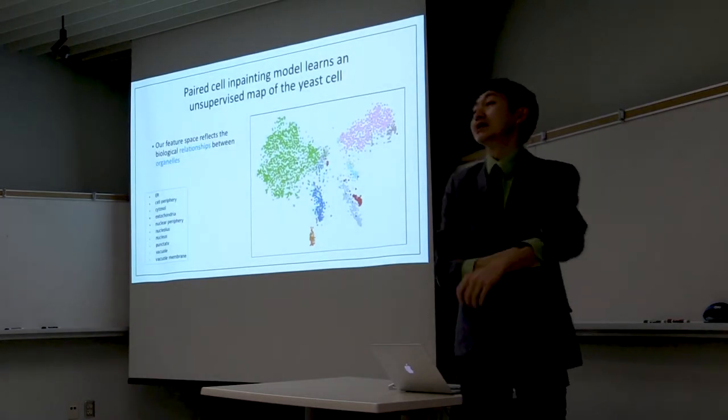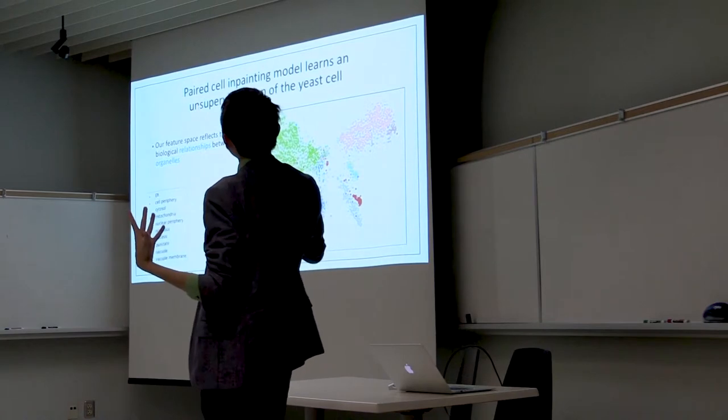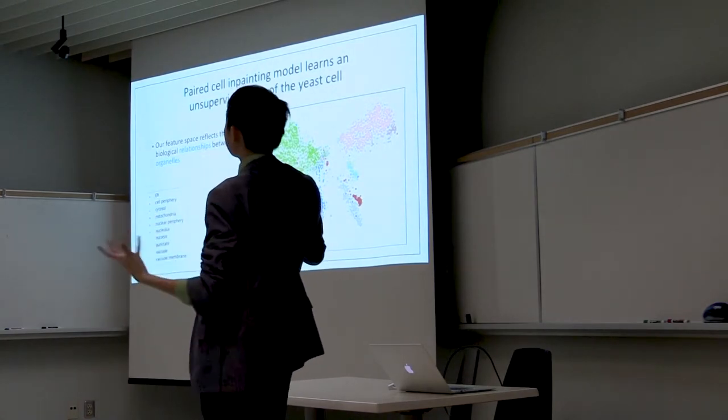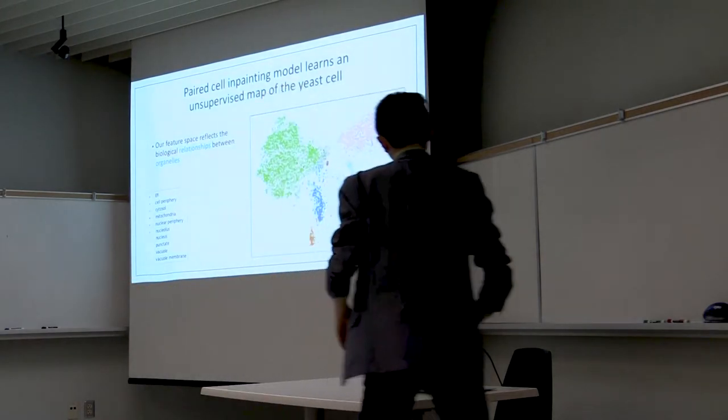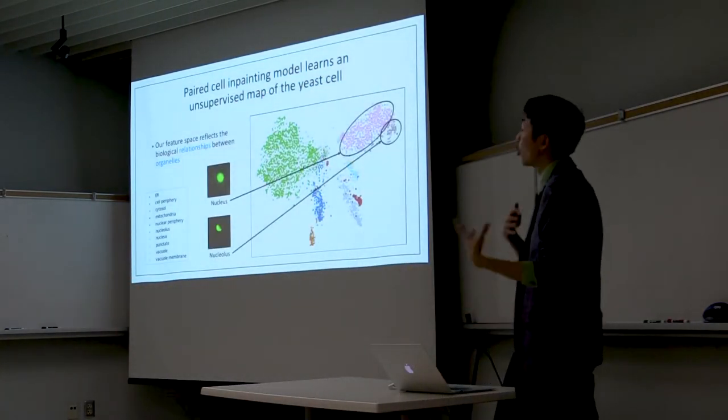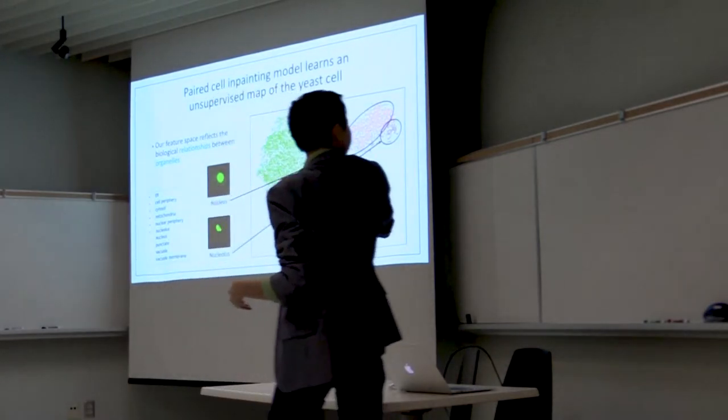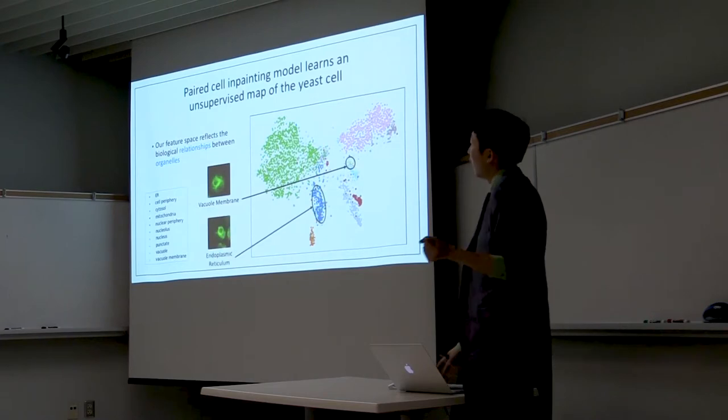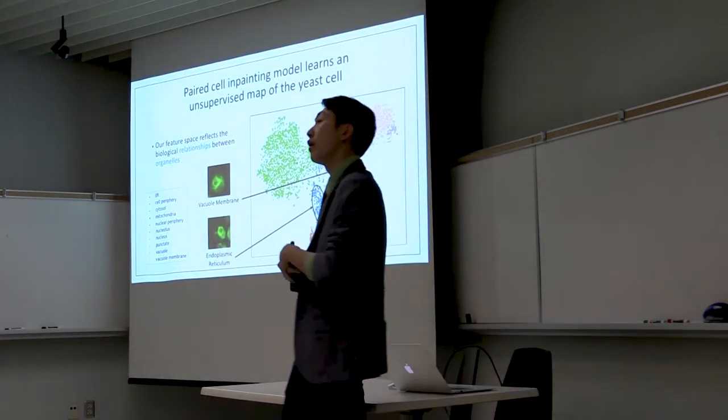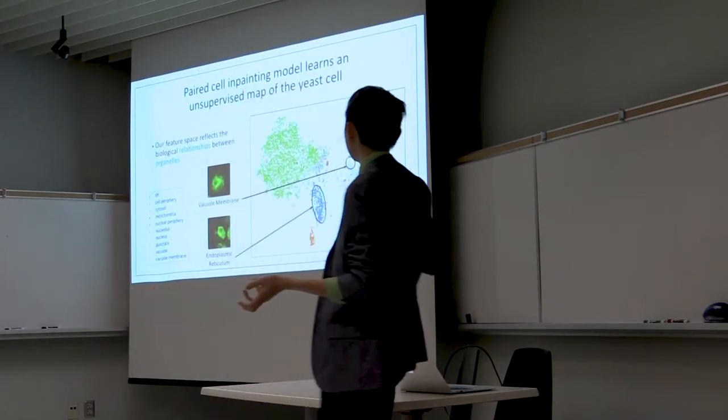And the nice thing is that when you dive deeper into the representation that the model is learning, it seems to be learning an unsupervised map of the yeast cell. So what this means is that in feature space, you have these hierarchical relationships within organelles. Similarly, organelles that are closely related in function, such as the nucleus and the nucleolus are close in the feature space, similar to the vacuole and the vacuole lumen, whereas organelles that are distinct in their functions, such as the vacuole lumen and the ER, are separated in the feature space.